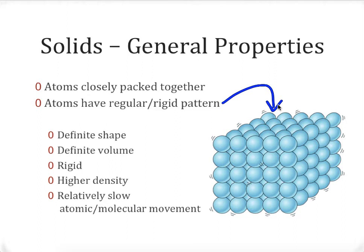This regular repeating pattern gives solids their characteristic properties. We have a definite shape and a definite volume. This regular structure prevents the solid from changing its general shape. We expect solids to be rigid, with higher densities because the atoms are so closely packed together. We also expect relatively slow atomic or molecular movement — the close packing really prevents them from moving in any meaningful way, so they essentially just wiggle in place.